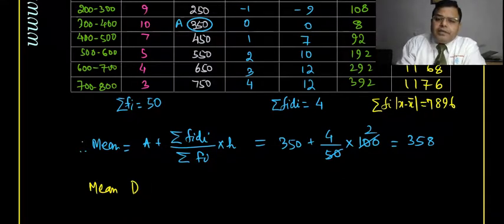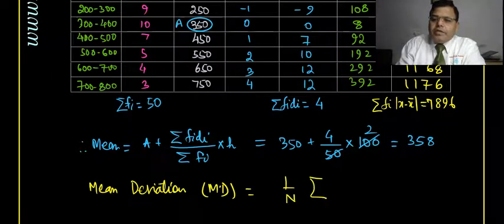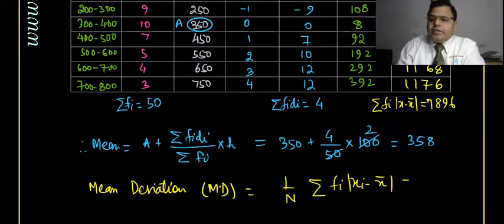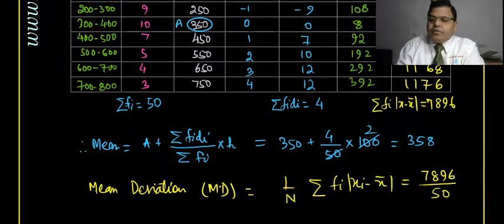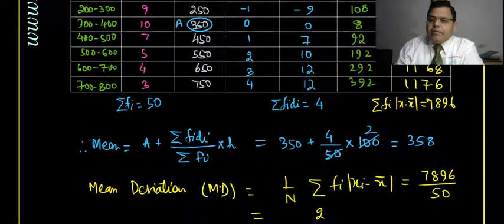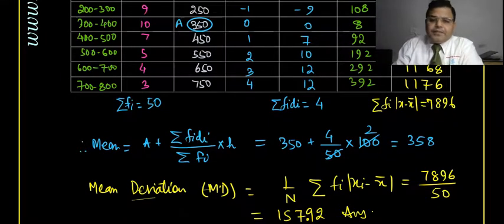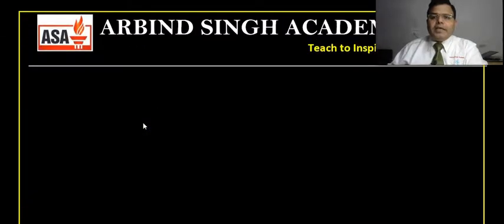Therefore, mean deviation about mean = (1/n) × Σfi·|xi − x̄| = 7896 / 50 = 157.92. That is the answer to this question. I hope you understood how to solve it.